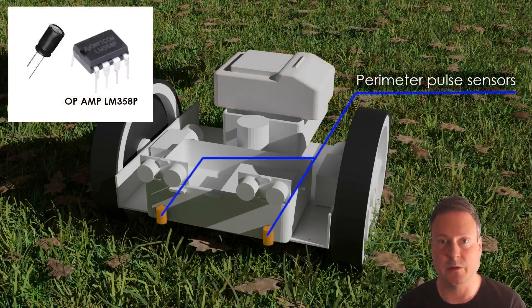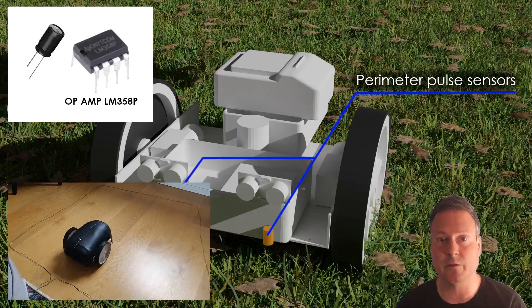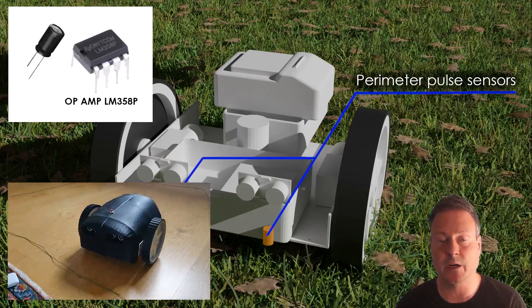The perimeter pulse sensors, basically a coil connected to an operational amplifier, are placed on each side of the front of the robot to avoid running over the perimeter wire and to be able to follow a guiding wire back to the charging station.